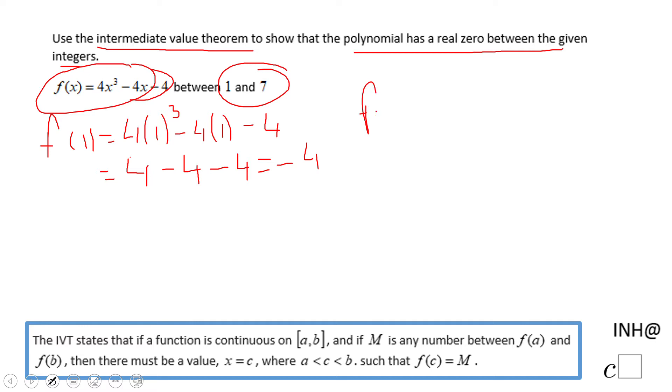Similarly, we're going to do f(7), which is 4 times 7³ minus 4 times 7 minus 4. We need a calculator here. 7³ is 343.